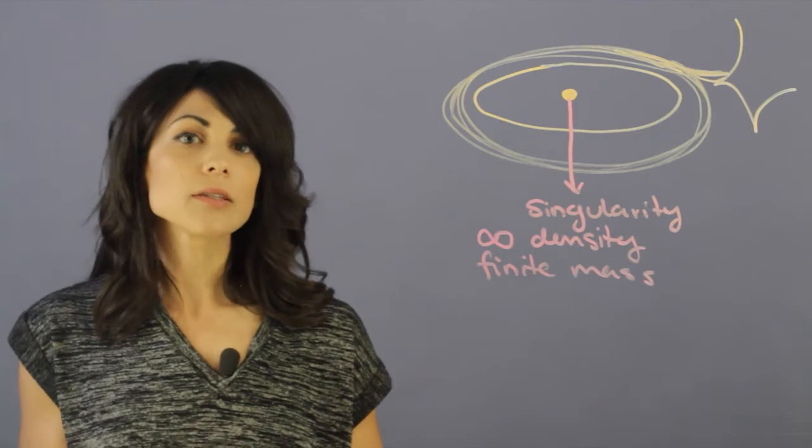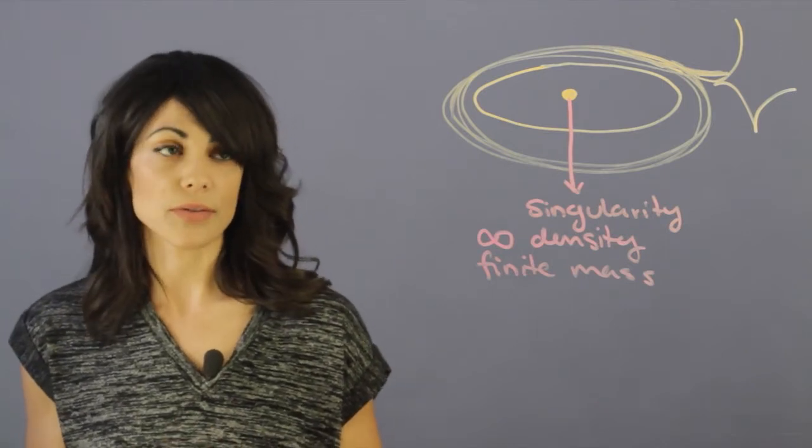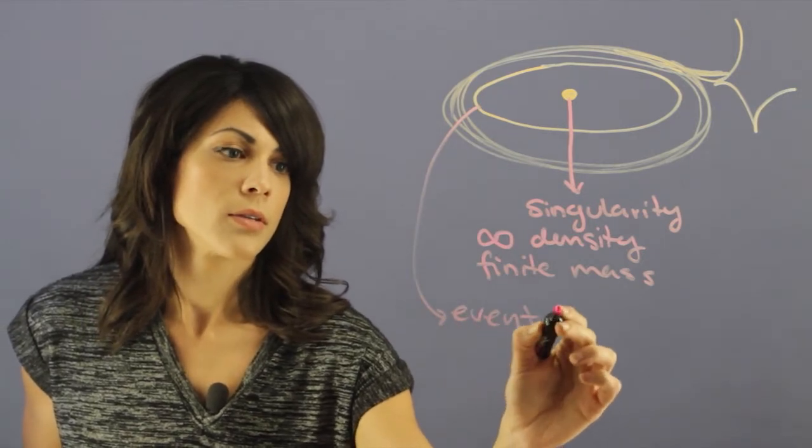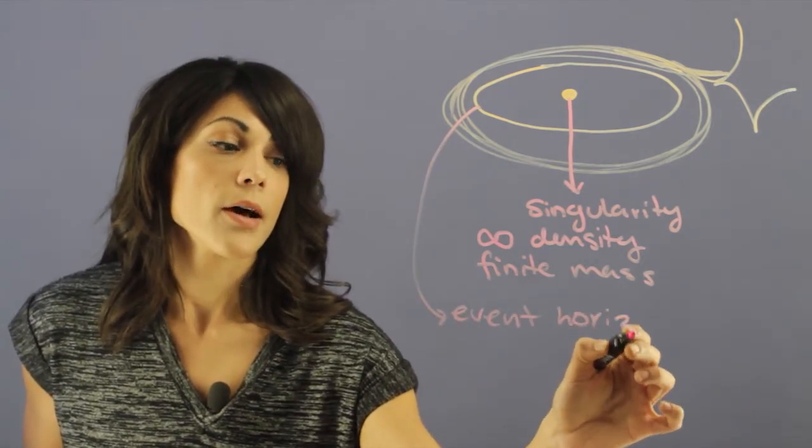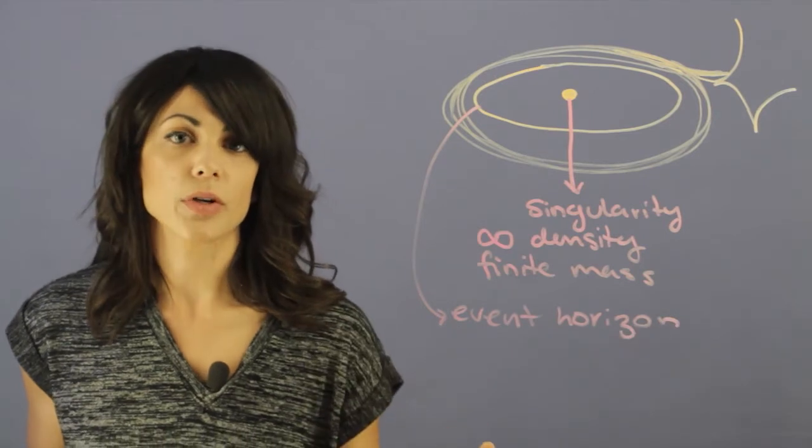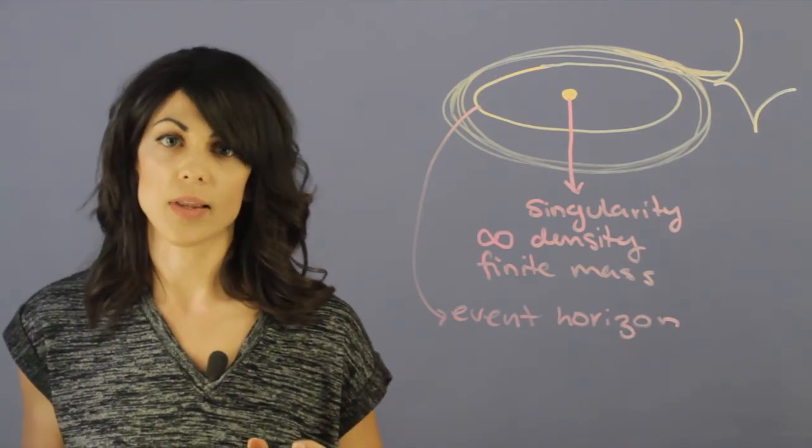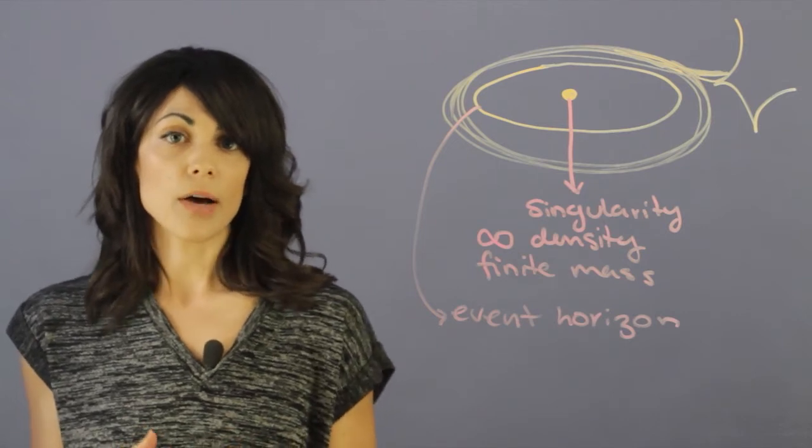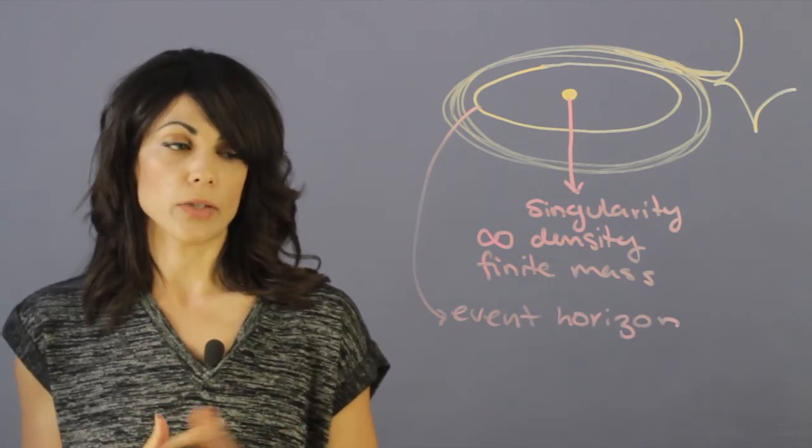Now the next thing that we want to talk about is the event horizon and this is the event horizon. Now the event horizon is the point of no return. Once you pass the event horizon not even light can escape. You are going to remain either in orbit around the black hole or you're just going to go directly to the black hole.